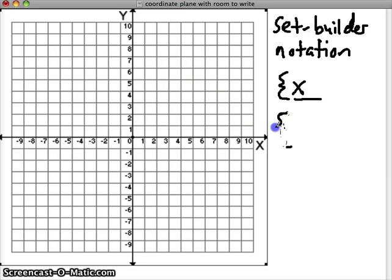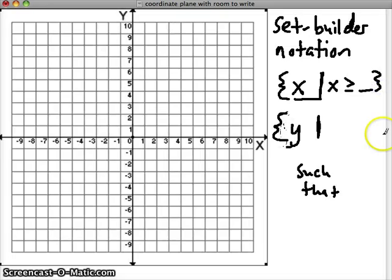Or we'll see a Y. And then the next thing that usually comes is a vertical line, and that vertical line stands for such that. So when you read it, we're talking about possible X values such that or possible Y values such that. And then we'll say X is greater than or equal to our number and we'll close our braces. Or we'll say such that Y is greater than or equal to a number and close our braces.